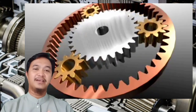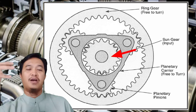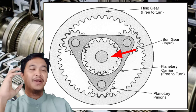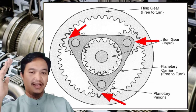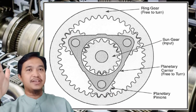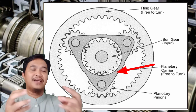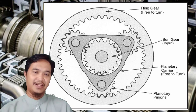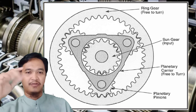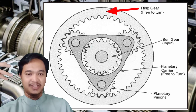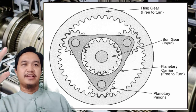Planetary gearset ini terdiri dari beberapa komponen utama. Yang pertama adalah sun gear — biasanya berada di tengah dan menempel pada input shaft. Yang kedua adalah pinion gear, yaitu gear yang mengelilingi sun gear, dikoneksikan oleh carrier sebagai komponen ketiga. Masing-masing pinion gear terpasang pada shaft yang terkonek pada carrier, dan carrier ini menopang keempat pinion gear. Yang keempat adalah ring gear, yang biasanya posisinya ditahan.